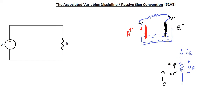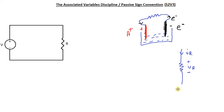This is the reason why we put a positive sign on the terminal the current enters and a negative sign on the terminal it exits. This leads to the passive sign convention — also called the associated variables discipline. Now you understand why the current is defined in this direction when the voltages are taken in that sense.